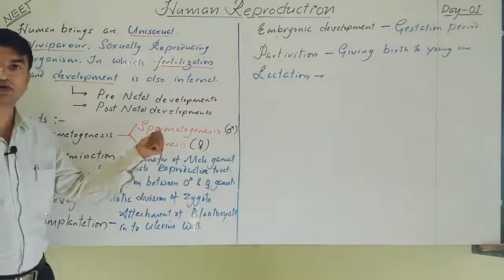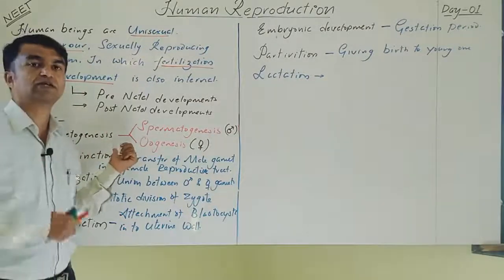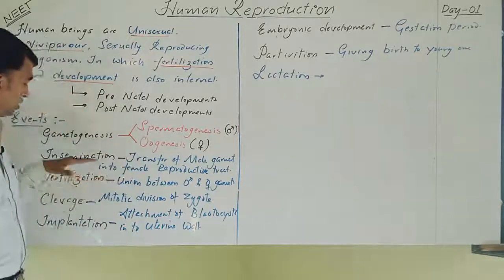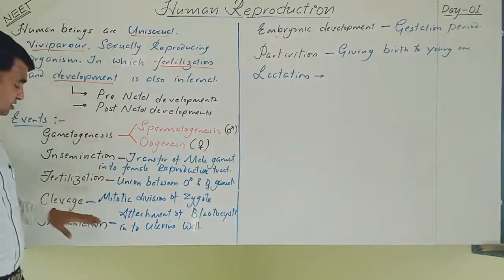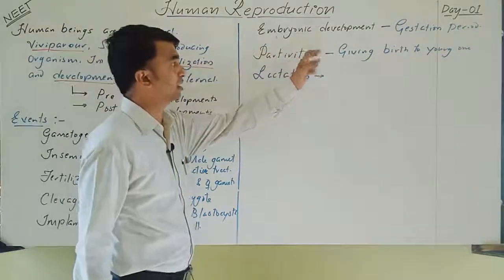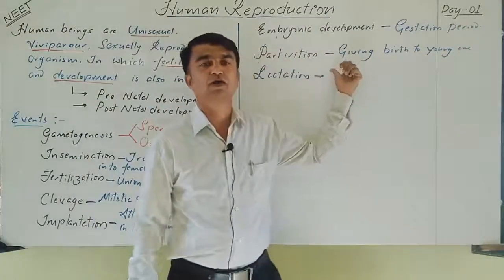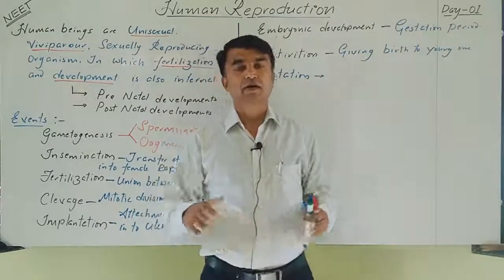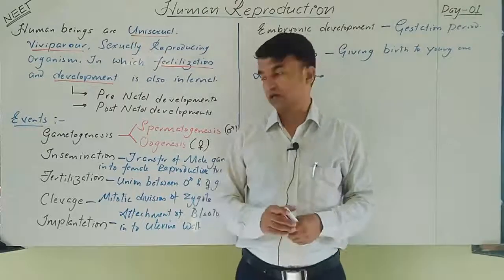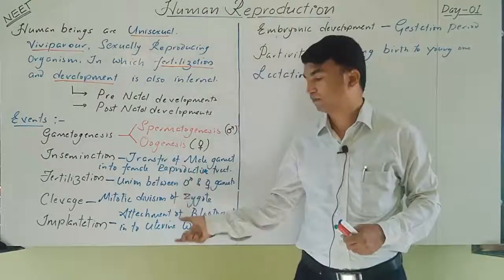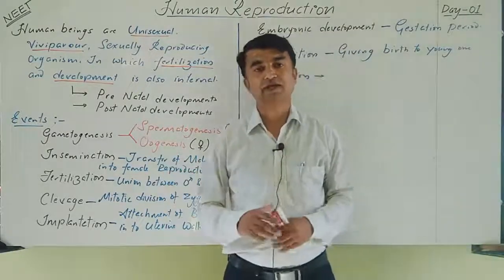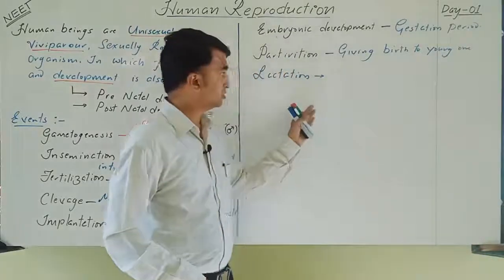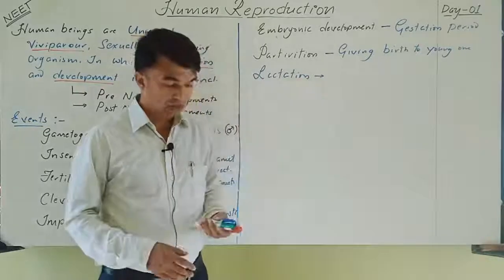To summarize: gametogenesis occurs in both male and female. Insemination is the response of the male to transfer gametes to the female reproductive tract. After that, fertilization, cleavage, implantation, embryonic development, and parturition all occur in the female reproductive system. That is why anatomically and physiologically more events occur in the female reproductive tract.